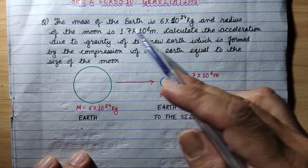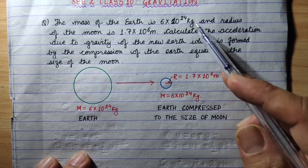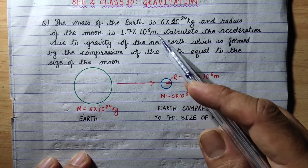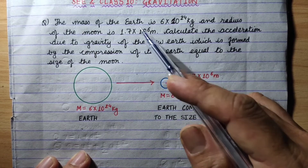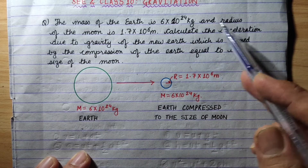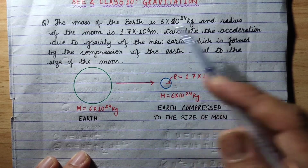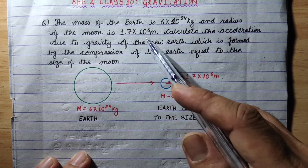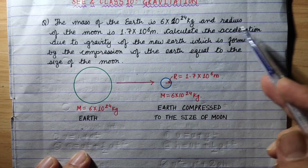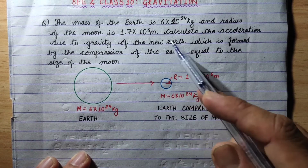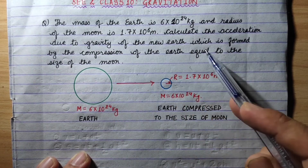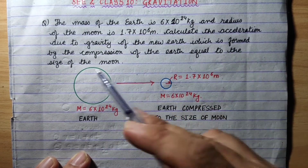The mass of Earth is 6 × 10²⁴ kg and the radius of the Moon is 1.7 × 10⁶ meters. Calculate the acceleration due to gravity of the new Earth, which is formed by compressing the Earth to the size of the Moon.